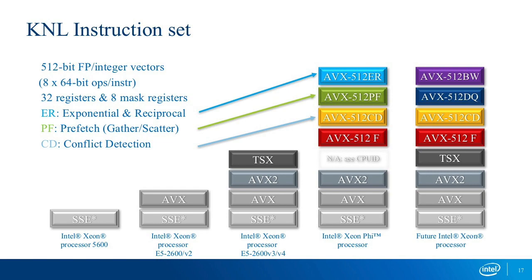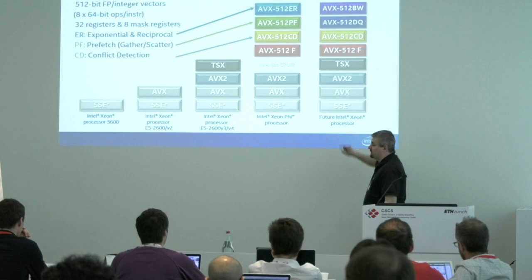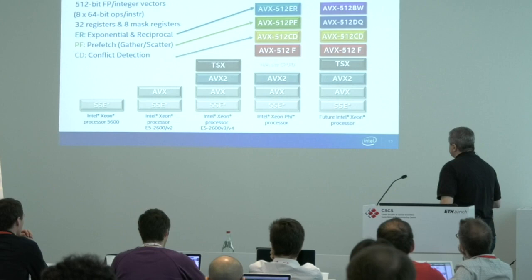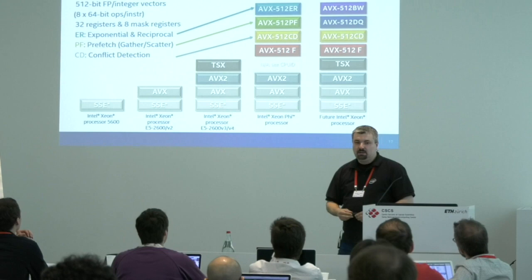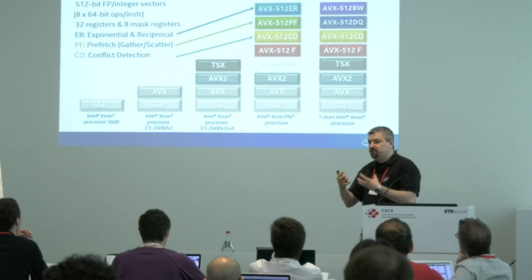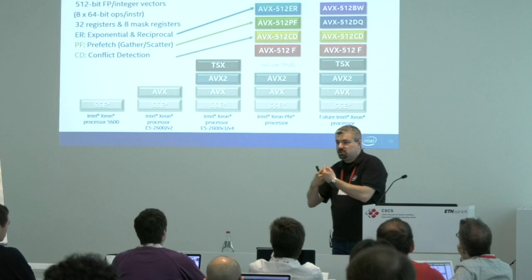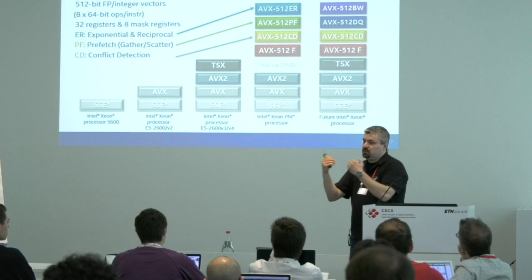What we do support is AVX-512F — the 'F' means Foundations — which is a common instruction set shared between Xeon Phi and future Xeon processors. There's also AVX-512CD — Conflict Detection — a set of vector instructions that help you detect conflicts when writing back to memory with scatter operations. You can detect potential race conditions and fall back from vectorization to scalar, then switch back.